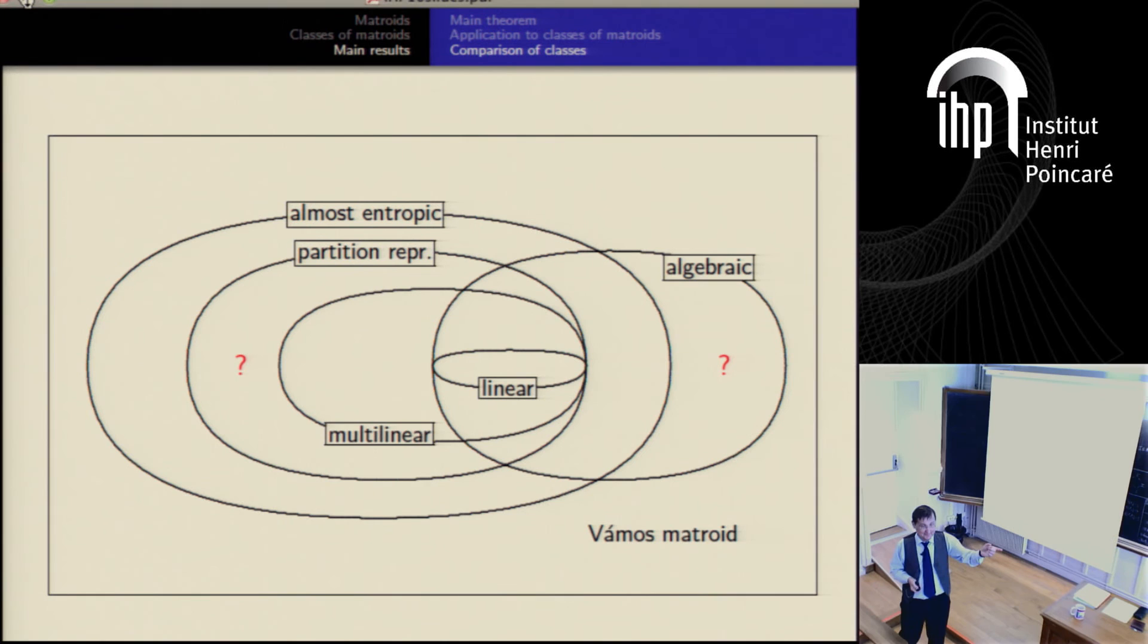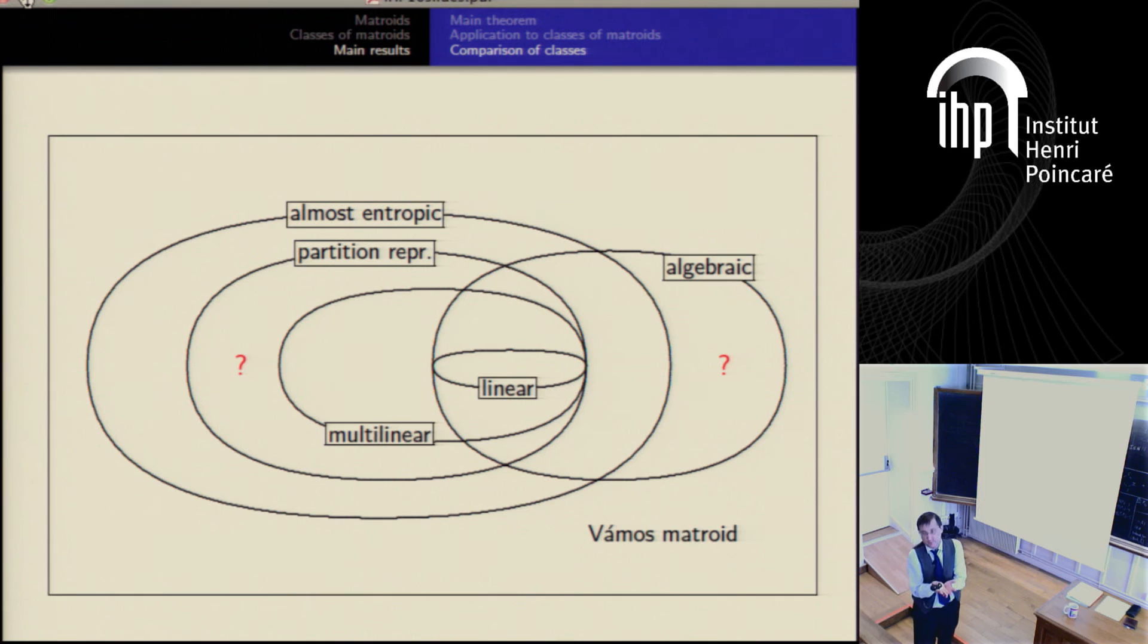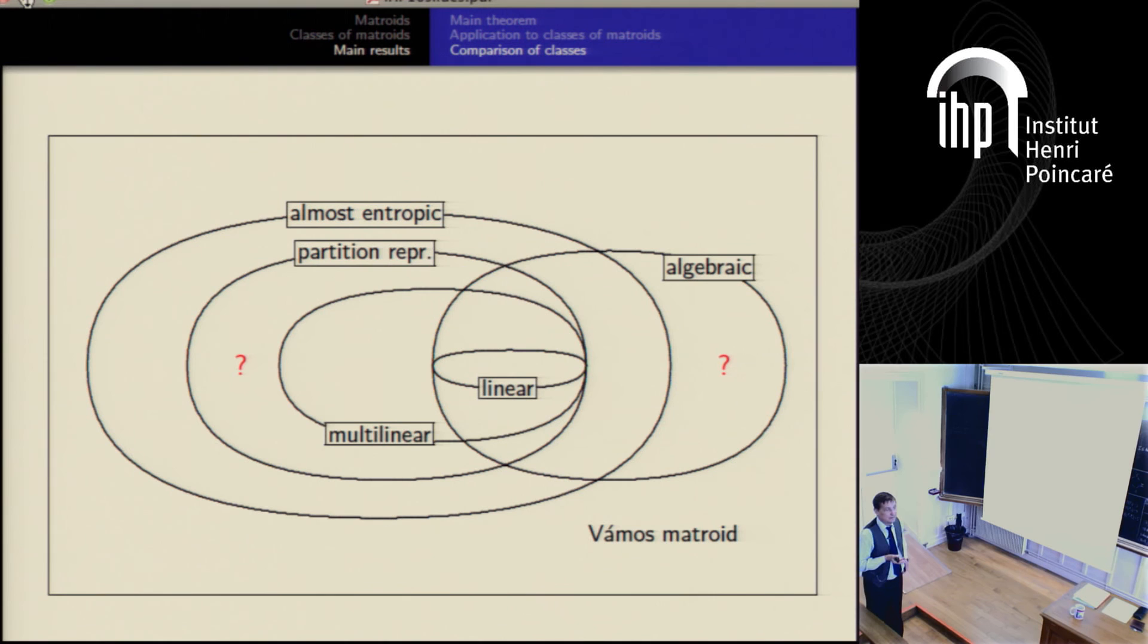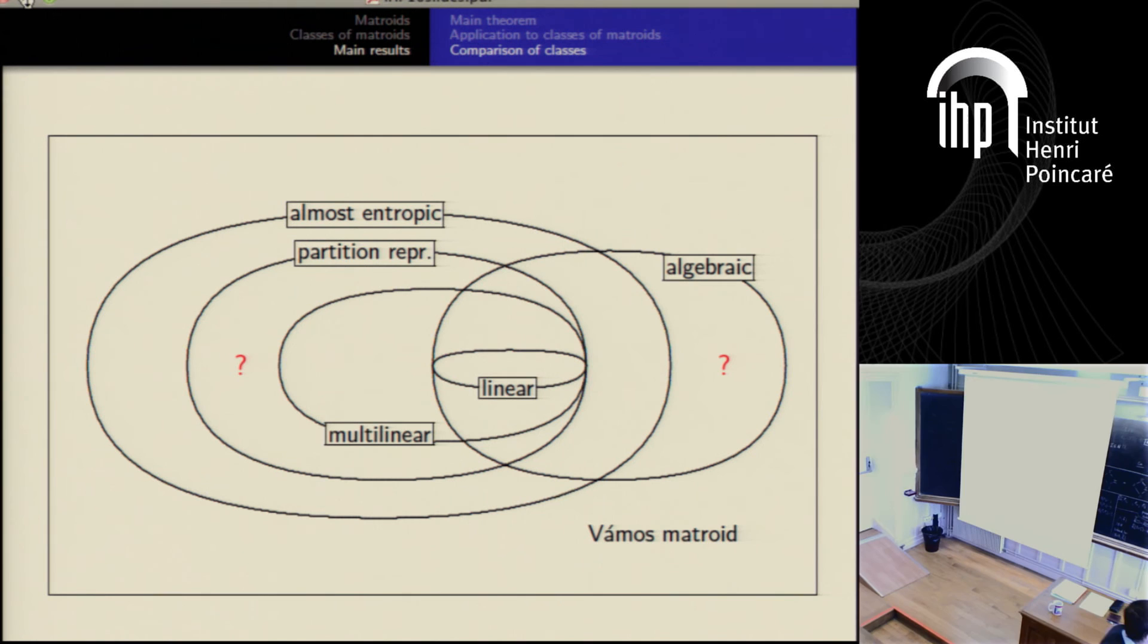And here is the final picture of classes of matroid. I cannot apply it to partition representable because of problem six. If problem six is true, I believe it is, then theorem applies, yes. And it can be applied to almost entropic, to linear over infinite field or multilinear. It can be applied to algebraic, because I have a lemma that you can paste algebraic polymatroids. And if you can paste, then you have Zhang Yang. And I think this is the classical question, which is in my problem five, yes. This is problem five. And this should be problem seven, yes.